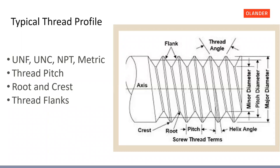All of this is governed by thread specs — UNF, UNC, NPT, metric. Back in 1770, the first screw machine lathe showed up in England and machine shops began making threaded fasteners, but there was no spec. At one point there were about 70 different thread pitches being used. A gentleman by the name of Mr. Whitworth looked at that and said we need to standardize this. He proposed a 55-degree thread angle with rounded roots and crests, and that became the standard used in 1841.